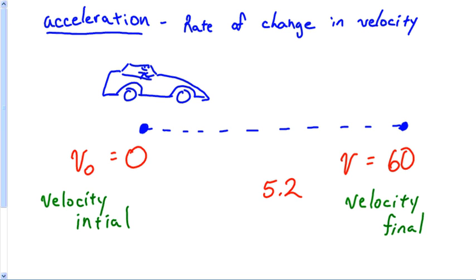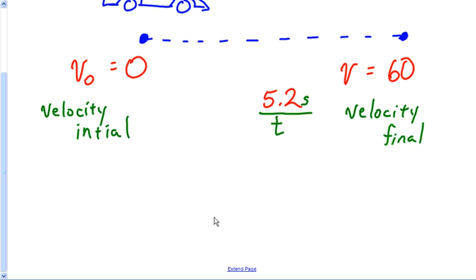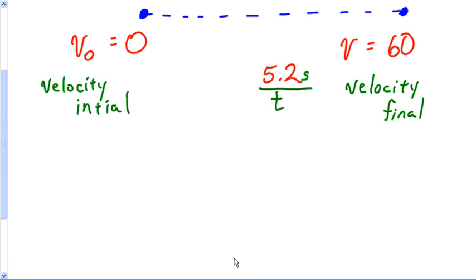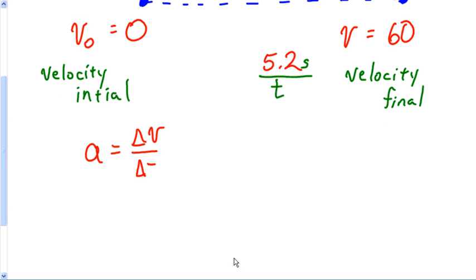In the middle, this 5.2 — when somebody says that, they're talking about time is what they're referring to. So all acceleration is, is how quickly you can change velocity, how quickly you can go from 0 to 60. This leads us to the basic equation for acceleration: acceleration in its purest form is nothing but a change in velocity over a change in time.